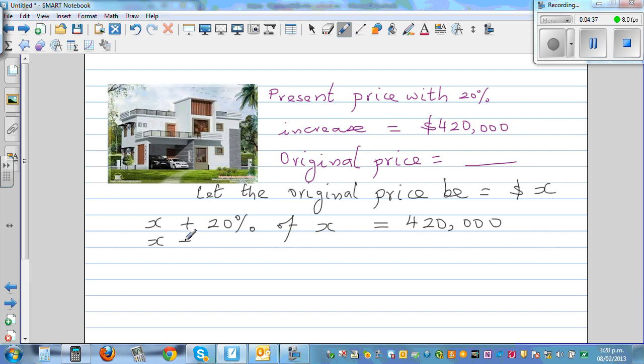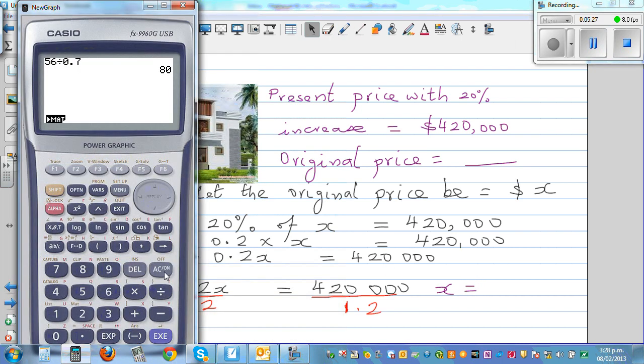So this, I can say, that is X plus 20% as a decimal, 0.2 times X, is equal to $420,000. And this is 1X plus 0.2 times X, which is 1.2 times X, is equal to $420,000. So you're going to divide this side by 1.2. So your answer is X is equal to, this divided by this, so let me get a calculator, $420,000 divided by 1.2 equals $350,000.